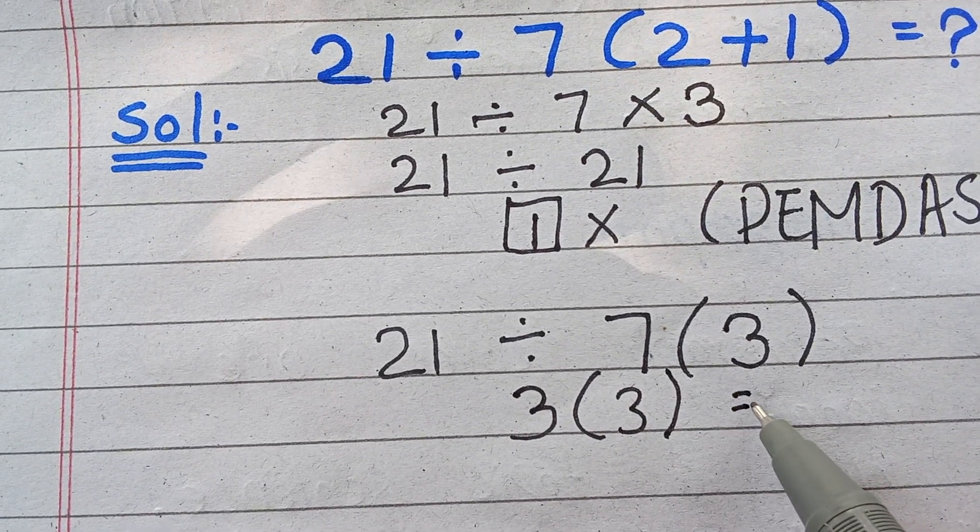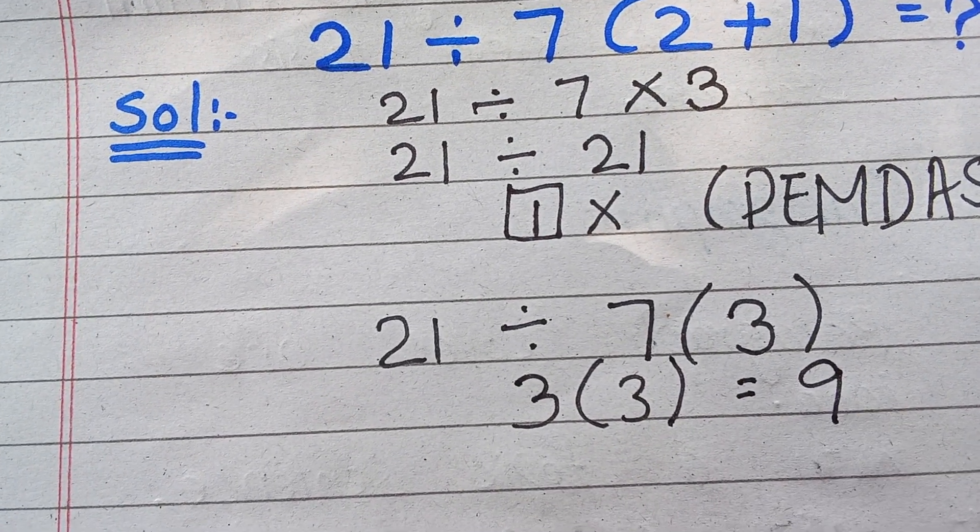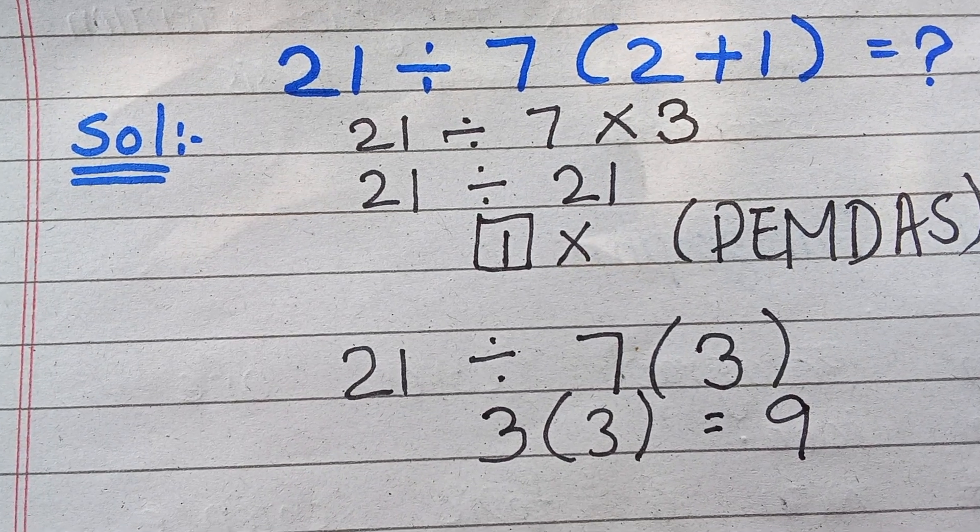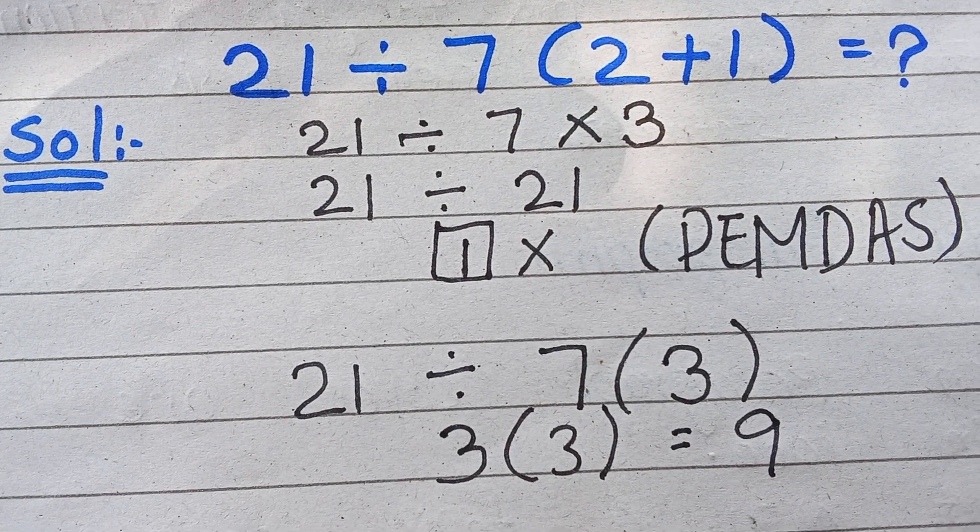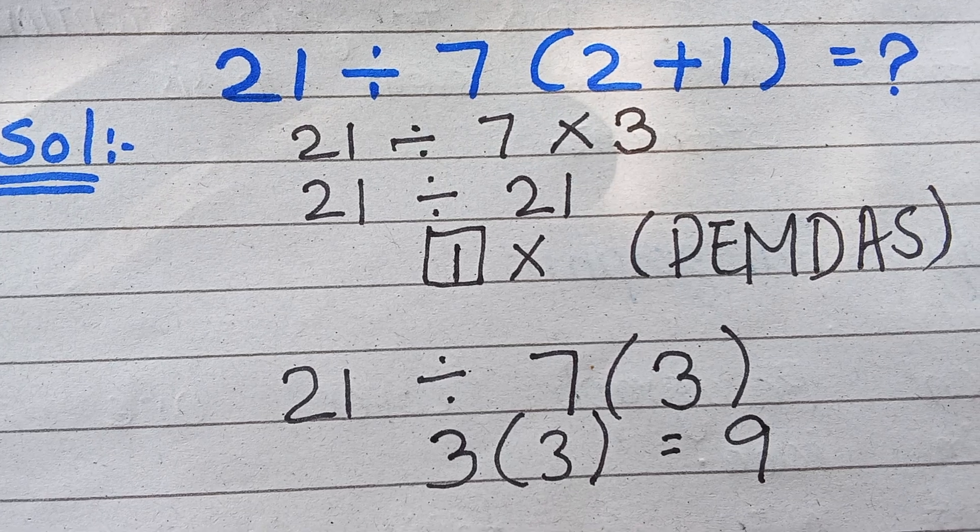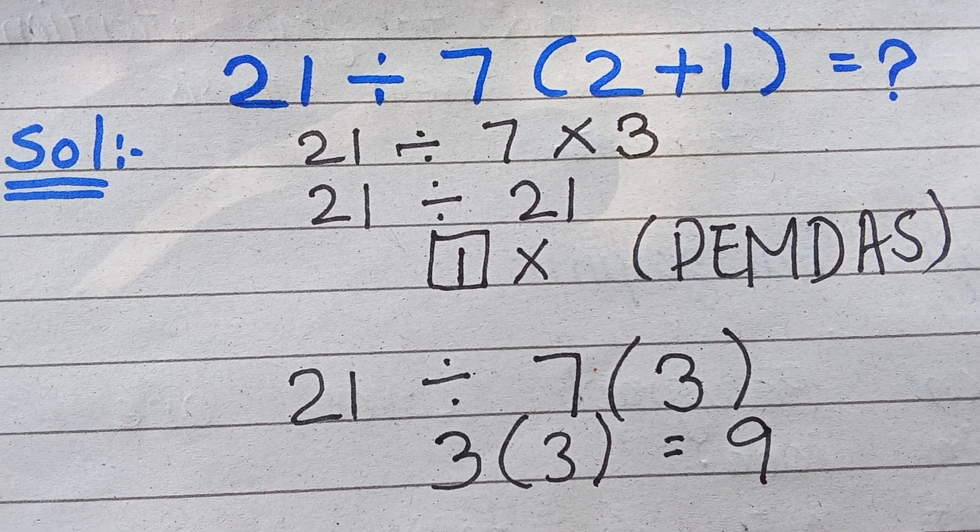3 times 3 equals 9. This is the final answer of this expression. If you face any issue, kindly comment and I will reply. Thanks a lot.